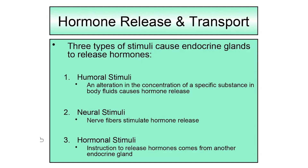We've talked about what endocrine organs are — they release chemicals called hormones into the blood, which transports them to other cells that have receptors for them. Endocrine organs are not always just producing and releasing hormone; there has to be a stimulus that causes them to release it. There are three different types of stimuli that will cause endocrine glands to release hormones, and some endocrine organs respond to one type while others respond to different types.